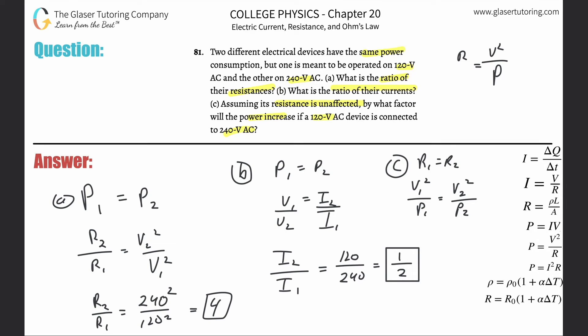Just do a little cross multiplication here, move your variables around. Now we're just going to solve: P2 over P1 is going to be equal to V2, and we call that in this case the 240 squared, over then the 120 squared. This works out to be 4 again.